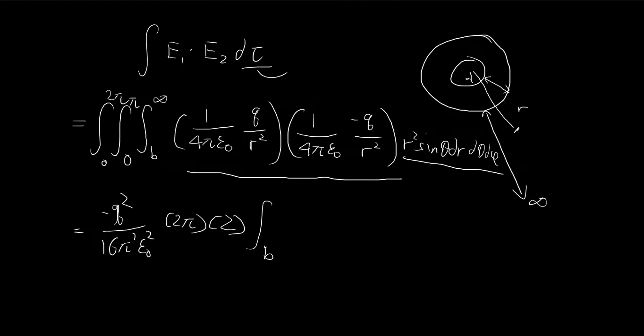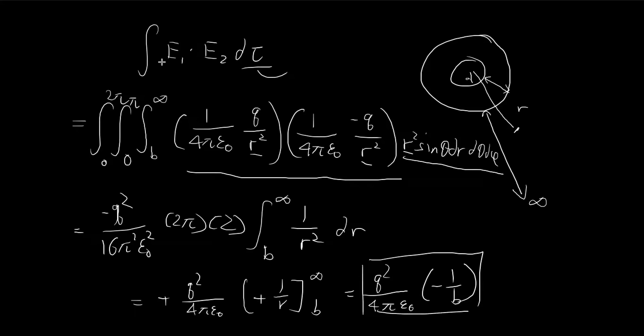And then for the r term, it goes from b to infinity. We have r to the power of 4 and then r squared, so it adds up to 1 over r squared dr. So this is a rather simple integral. It goes from b to infinity. So we get negative 1 over b. So this is this integral over here.